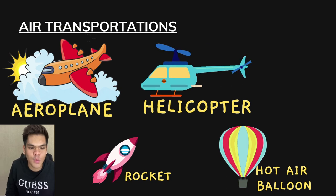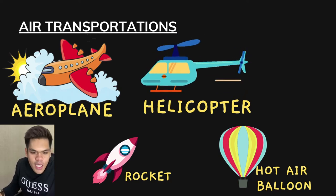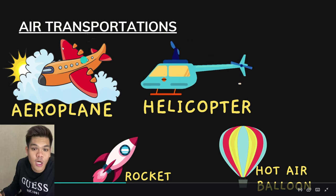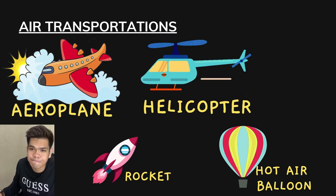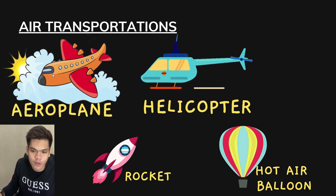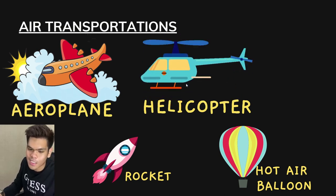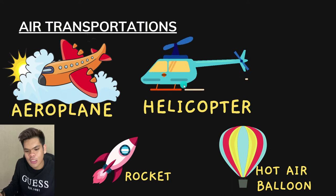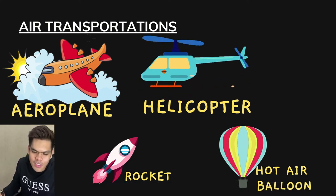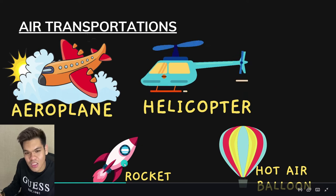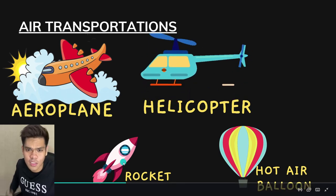Next, we go on to the last type of transportation, which is air transportation — pengangkutan udara. The first example is an aeroplane, which is quite common; we always see it on TV or up in the sky. We also have a helicopter, which is almost the same as an aeroplane but smaller. And then we have a rocket. We might not have been in a rocket before because rockets only take astronauts to space, but we have to know that a rocket is also a type of transportation.